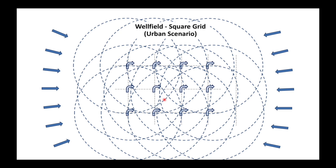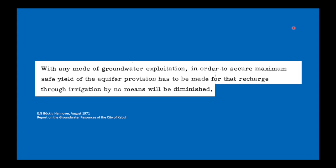If there's only one well field in a large area maybe it doesn't matter, but with many wells as expected in an urban area, serious over-exploitation can result. Dr. Böck wrote in Hanover in August 1971: 'With any mode of groundwater exploitation, in order to secure maximum safe yield of the aquifer, provision has to be made that recharge through irrigation by no means will be diminished.' Even with just a pencil and paper in 1971, Dr. Böck reached conclusions still very relevant today in peri-urban areas where agricultural land is converted to urban use, significantly affecting water balance and the sustainability of well fields.